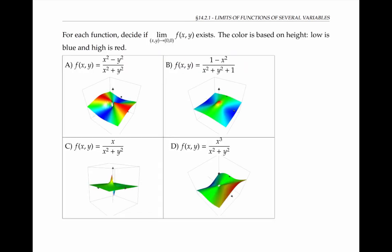Sometimes it's possible to get an intuition about whether a limit exists by looking at the graph of the function. For each of these functions, try to decide if the limit as (x, y) goes to (0, 0) of f of x, y exists. The graph can help you decide. The color is based on height: large z values are colored red, smaller z values are colored blue, and green is somewhere in between. For some functions, the value doesn't exist at x equals zero, y equals zero, which is why the graph has a hole in it.